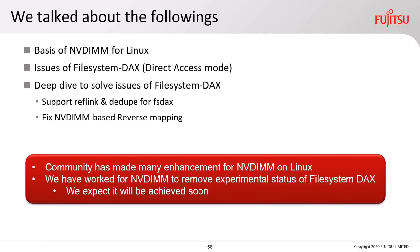In conclusion, we talked about the basis of NVDIMM for Linux and issues of file system DAX, and a deep dive to solve those issues: supporting reflink and dedupe for FSDAX, and fixing NVDIMM-based reverse mapping. The community has made many enhancements for NVDIMM on Linux, and we have worked to remove the experimental status of file system DAX. We expect it will be achieved soon. Thank you very much for listening.